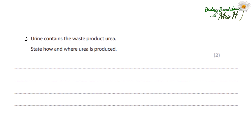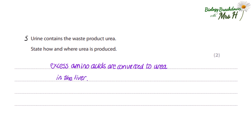Number five: urine contains the waste product urea. State how and where urea is produced. Excess amino acids are converted to urea in the liver. For some exam boards such as Edexcel, you need to know this conversion is called deamination. But for AQA, you don't need to know the name — you just need to know excess amino acids are converted.